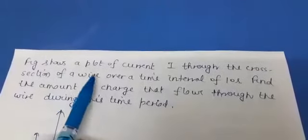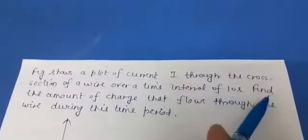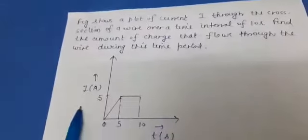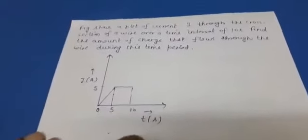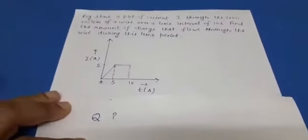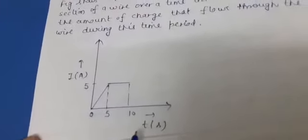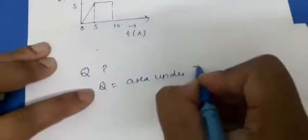Now the figure shows a plot of current through a cross-section over a time interval of 10 seconds. Find the amount of charge that flows through during that time period. Here current has been given plotted with time — a graphical representation with specified values and limits is shown. From this graph you have to calculate the amount of charge that flows. As we have done the concept that area under velocity-time graph gives displacement — the same concept you will apply here. As current is charge per unit time, charge will be obtained by the area under the I-t graph.